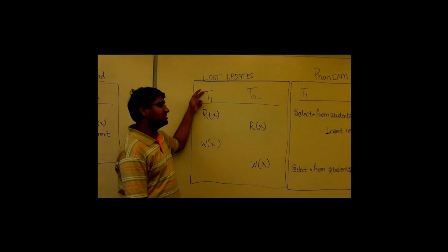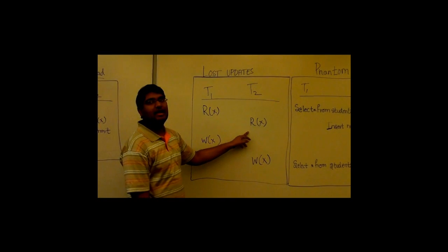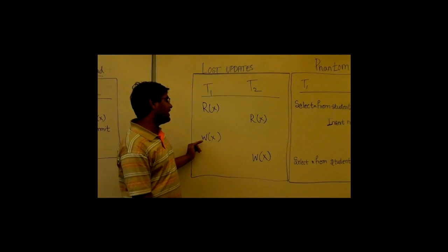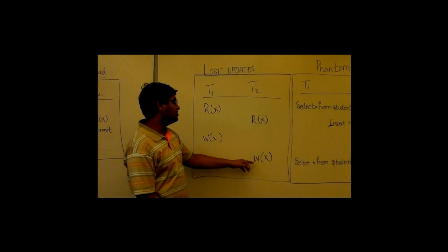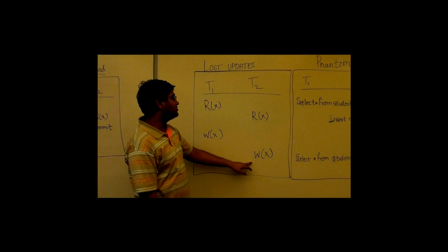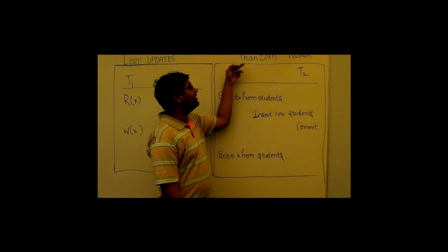In lost updates, in transaction T2, a read operation is performed. T2 writes all changes but does not see the changes made by T1.